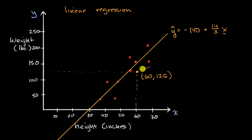So let me write that down. So for example, the residual at that point is going to be equal to, for a given x, the actual y value minus the estimated y value from the regression line for that same x.